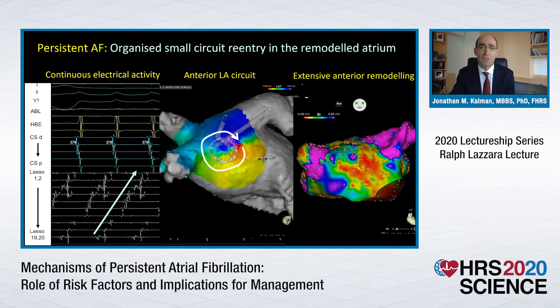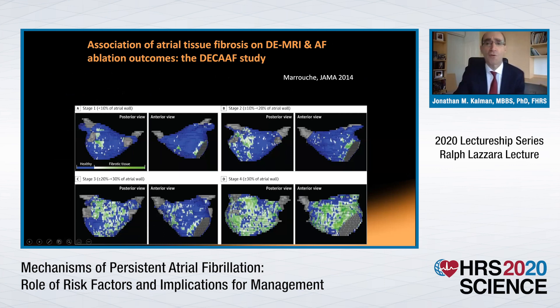This clinical example is particularly illustrative. This is a patient with persistent atrial fibrillation who, after pulmonary vein isolation, organised into a regular rhythm — this anterior small circuit, a rotor or small circuit re-entry in the anterior left atrium. Look at the nature of the signals here: fractionated, low amplitude, long duration, occurring in this region on the voltage map. Reds and yellows show very low voltage — a remodelled atrium. The process underlying all of this is interstitial fibrosis.